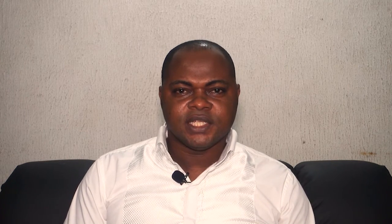Immediately after ovulation, the ovaries produce more progesterone and estrogen needed by the uterus for possible implantation of the fertilized egg. In this phase, it is progesterone that makes the uterine endometrium thicken. The overall goal of this phase is to provide an ideal environment where the fertilized egg can implant and develop. Once ovulation occurs, the empty follicle left in the ovary is called corpus luteum. This then releases progesterone in higher amounts and estrogen in lesser amounts. Once the egg is released and fertilized, it stays in the fallopian tube for some time before moving to the uterus.